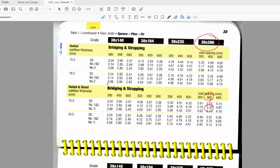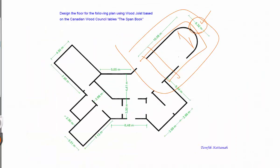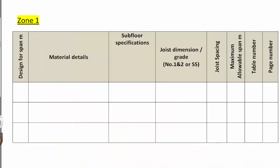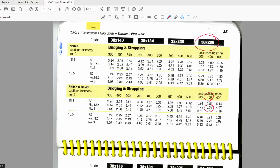All of this information needs to go into a template which I already have ready. So going to the template: we have only one span which is 5.3 meters. The measurement is in meters and the material is SPF — select structural number one and two. The subfloor is 15.5mm.